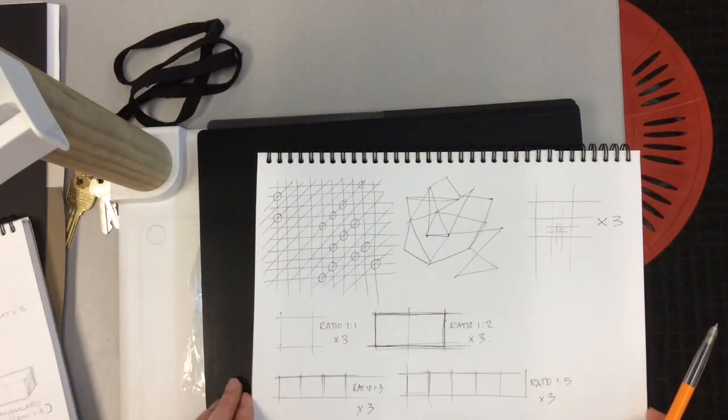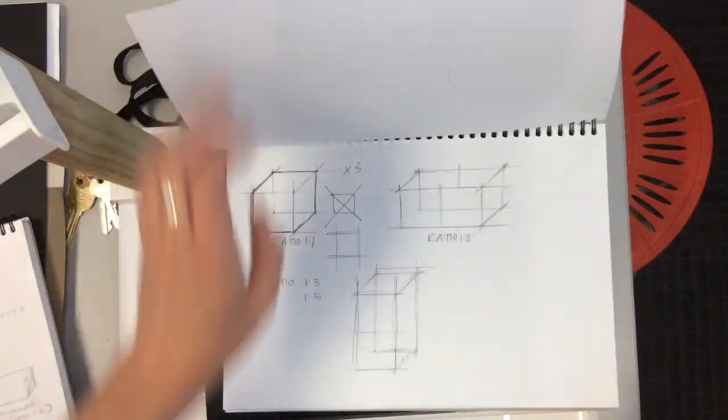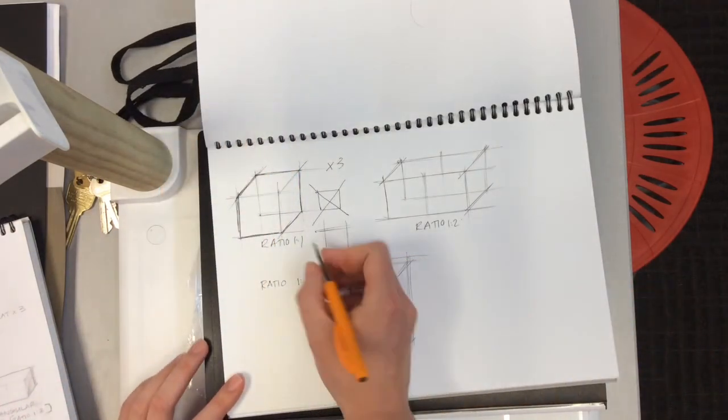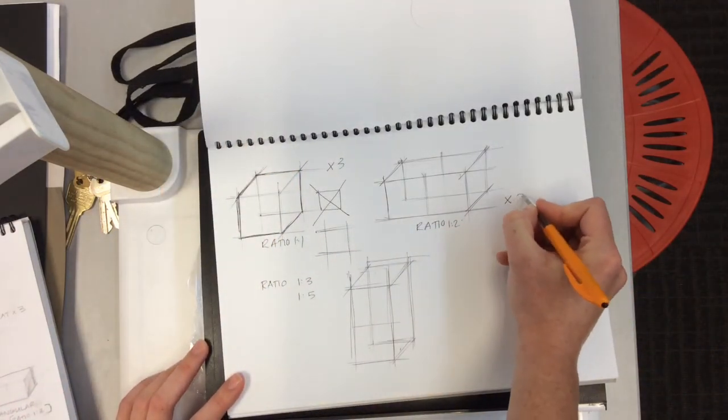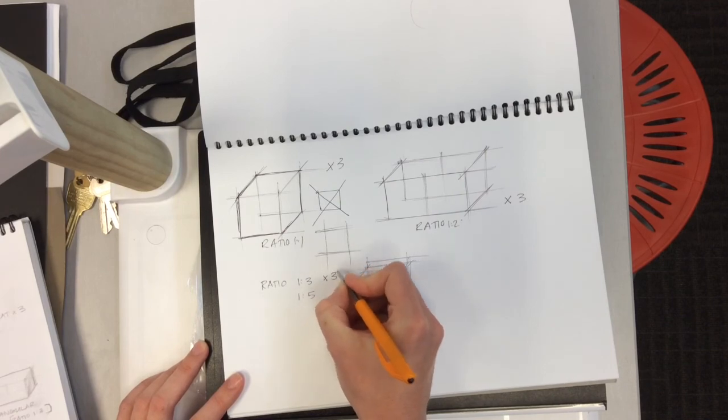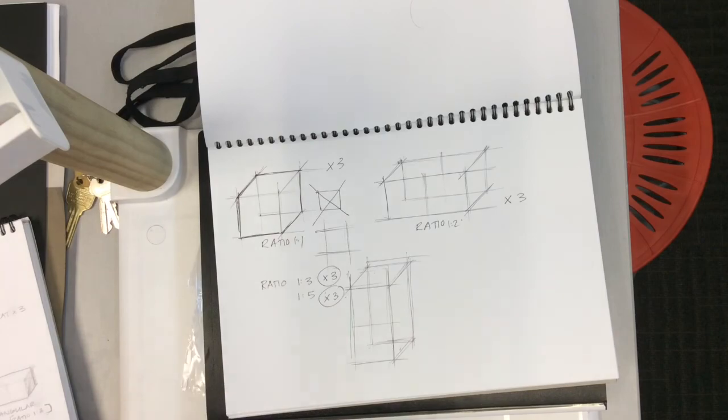You're going to do three of ratio 1:2, three of ratio 1:3, three proportion 1:2.